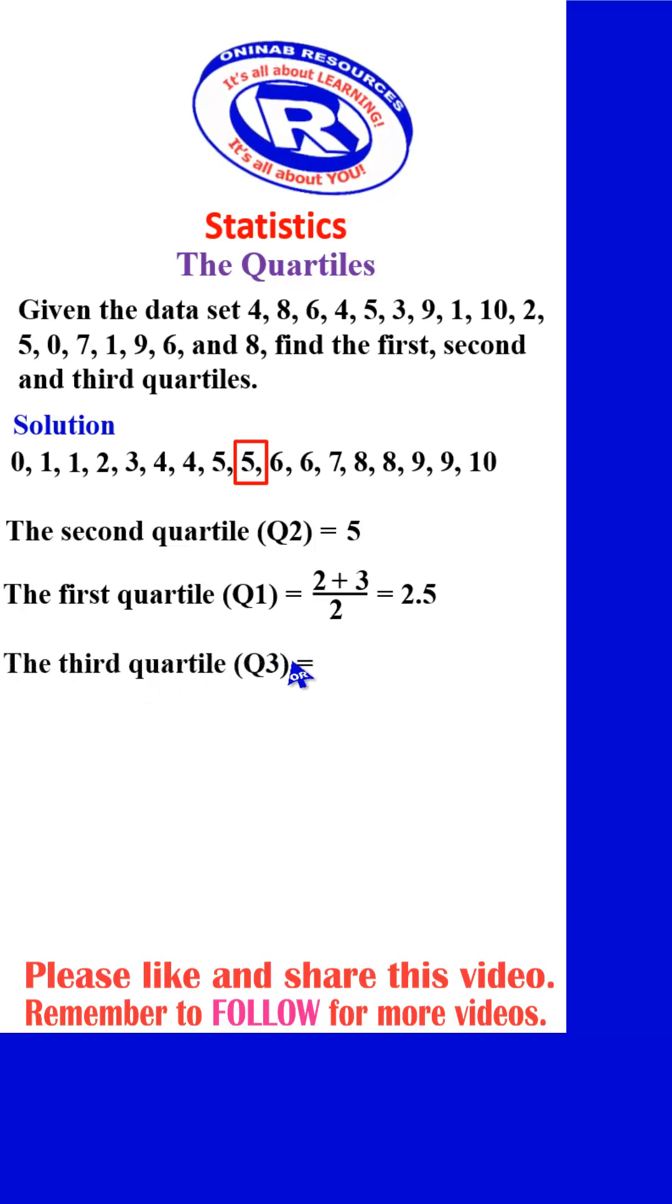We then go for the third quartile Q3. We divide the 8 numbers on the upper side into two, so we have the first 4 and the last 4. Since the two numbers in the middle are the same, 8 and 8, our third quartile Q3 is 8. Thank you for watching. I hope you enjoyed it. Please like and share this video.